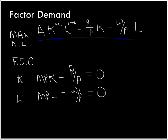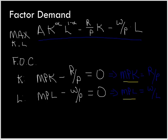Why do we set these equal to zero? Because that's where the function is maximized. With a little algebraic manipulation from the first-order conditions, we get that the marginal product of capital equals the real rental price of capital, and the marginal product of labor equals the real wage rate. So in equilibrium, MPK equals R/P and MPL equals W/P.